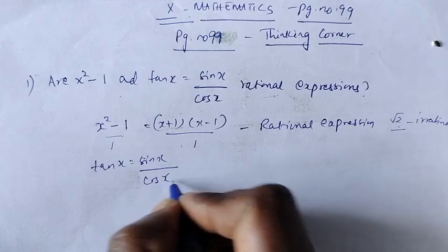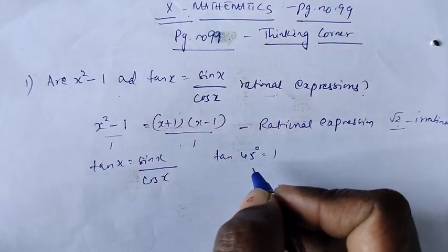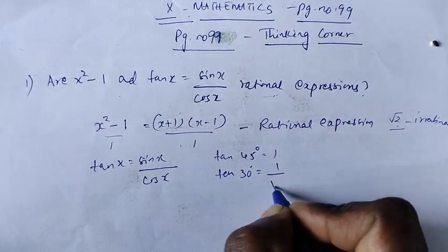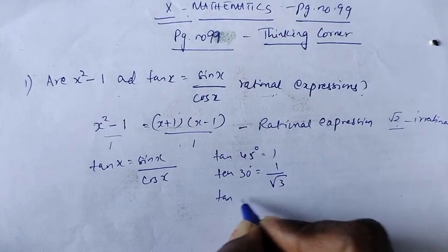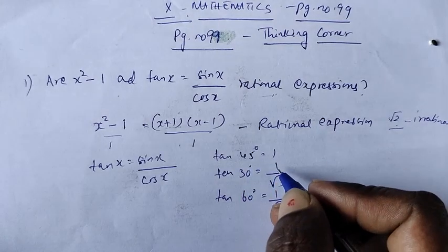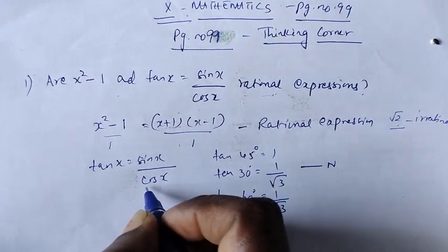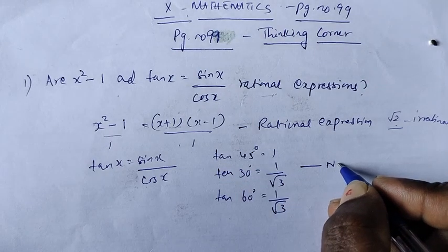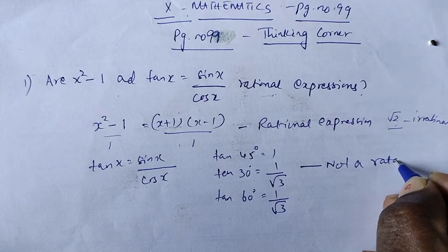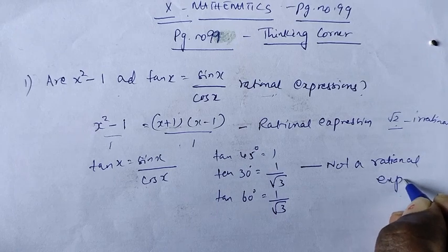Next, tan x equal to sin x by cos x. This is not a rational expression. For example, tan 45° gives 1 — that is rational. But tan 30° gives 1 by root 3 — it comes under a root. So tan x equal to sin x by cos x is not a rational expression.